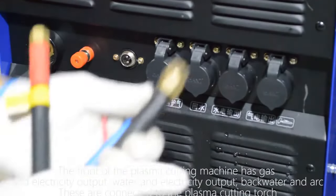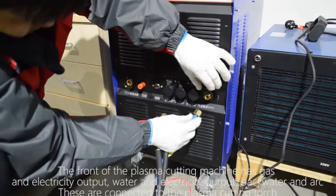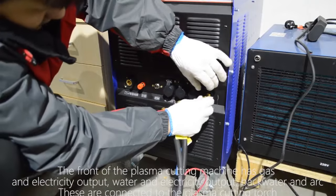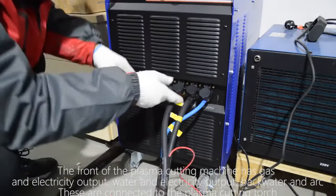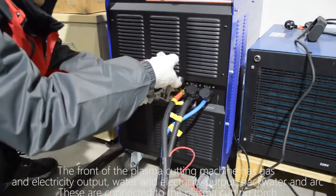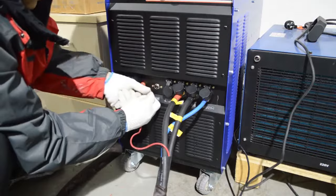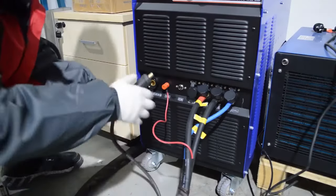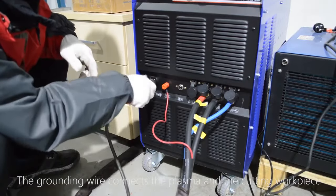The front of the plasma cutting machine has gas and electricity output, water and electricity output, backwater and arc. These are connected to the plasma cutting torch. The grounding wire connects the plasma and the cutting work piece.